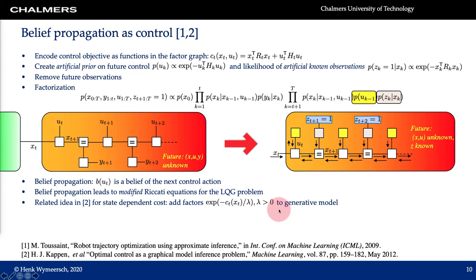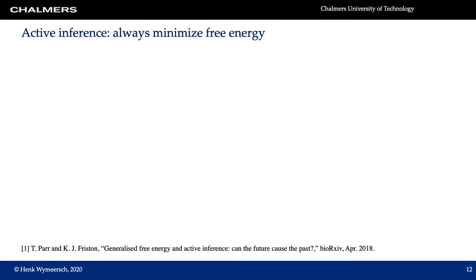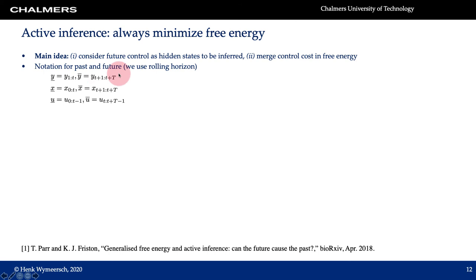We are now prepared to discuss the relation between active inference and LQG. In active inference we are always trying to minimize free energy, and this leads us to our main idea. Similar to the previous papers, we consider the future controls as hidden states to be inferred. We also merge the control cost into the free energy objective. Different from before but without any loss of generality, we use a rolling horizon: at time t we have a horizon from the current time up to T time steps ahead.